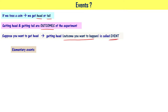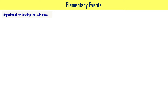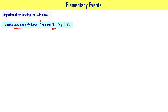In this video, we will learn about elementary events, mutually exclusive events, complementary events, impossible events, and certain events. First, elementary events. Let us consider an experiment: tossing the coin once. Once you toss a coin, you get head or tail — two possible outcomes. In set notation, the sample space will have two elements: H and T.